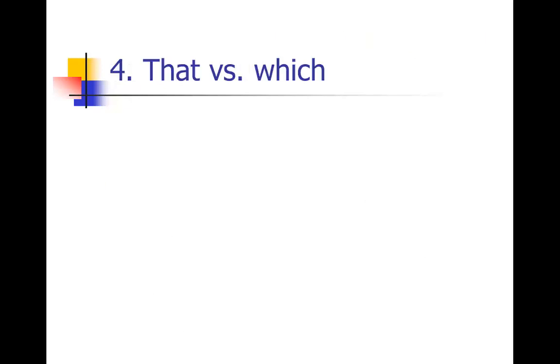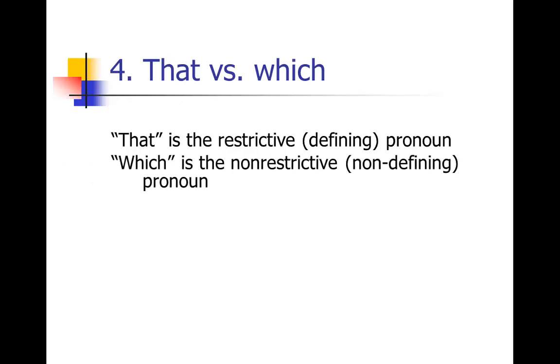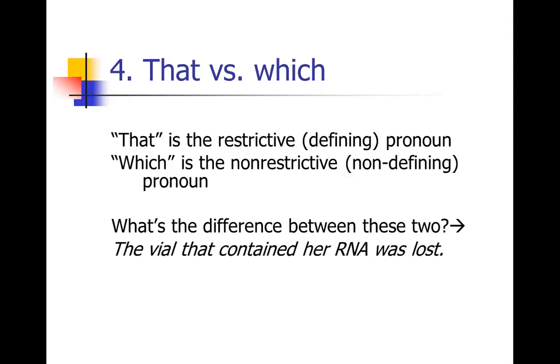The use of that and which often gets confused. So pay attention to this one. I edit this one a lot. That is used when you have a restrictive clause, and which is used when you have a non-restrictive clause. You can actually recognize when which is appropriate because you're going to be setting things off with commas. So what's the difference between these two? If you say the vial that contained her RNA was lost, you're saying the vial that contained her RNA was lost, the vial that contained her DNA was not. You're saying that there are many vials, and you're telling me specifically which one. That information is essential, because if I don't have that information, I won't be able to distinguish between the different vials.